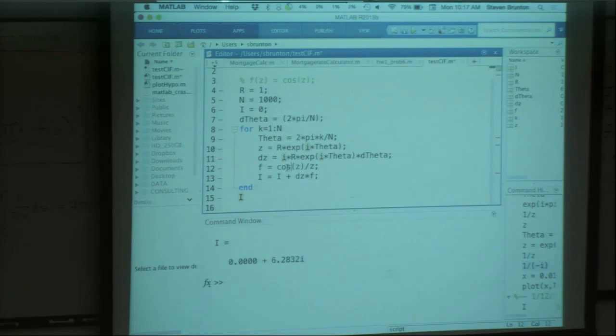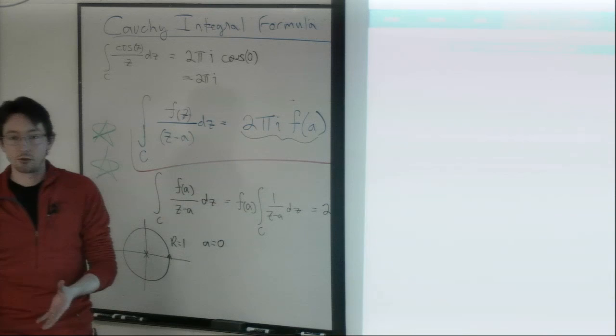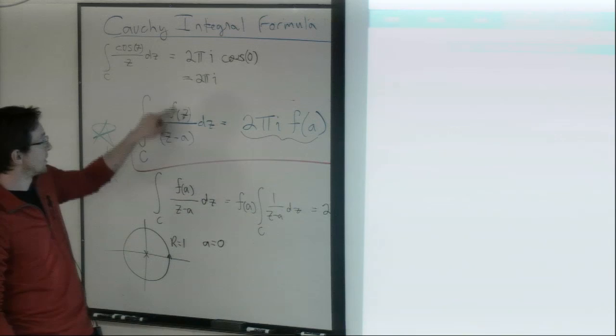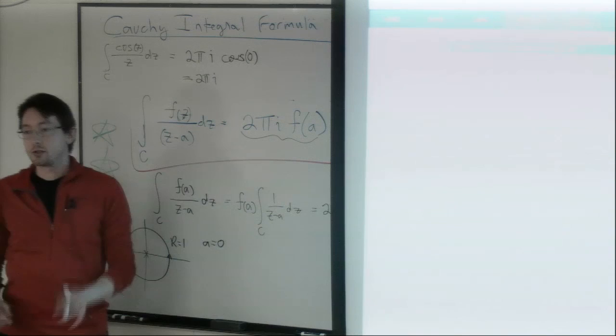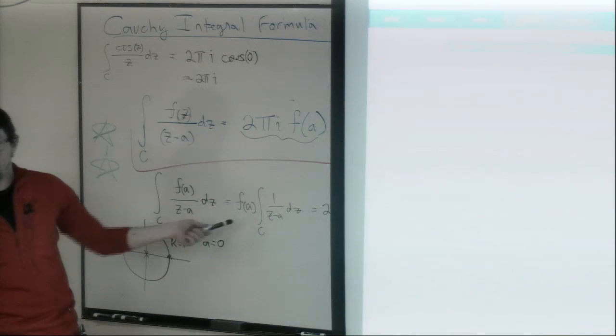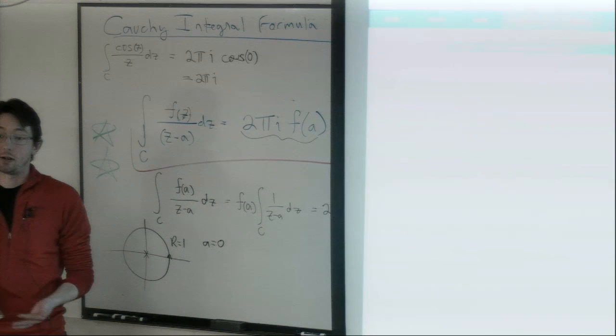That's basically everything for today. We have this extraordinarily useful Cauchy Integral Formula - it's only true when you divide by exactly one power of (z-a); five powers would give 0. Next time we're going to solve really difficult integrals using this, and we'll show how to do inverse Laplace transforms by hand instead of using lookup tables. To be continued.